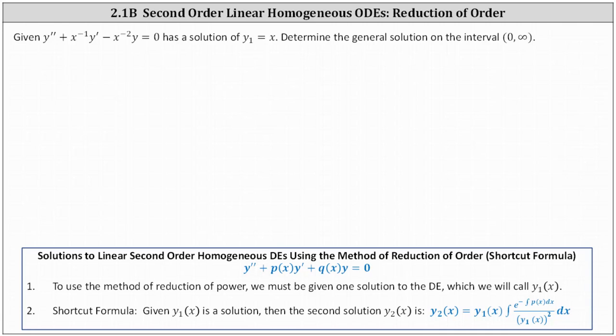We are given a second-order linear homogeneous differential equation that has a solution of y1 equals x. We're asked to determine the general solution on the interval from zero to infinity. We just solved this problem using the method of reduction of order.